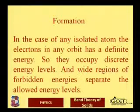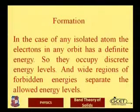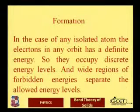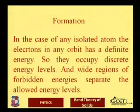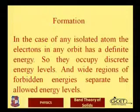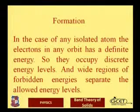Before we study band formation, we should study the situation in isolated atoms. The electrons in any orbit have a definite energy depending upon their four quantum numbers, so they occupy discrete energy levels with forbidden energy regions separated by the allowed energy levels.